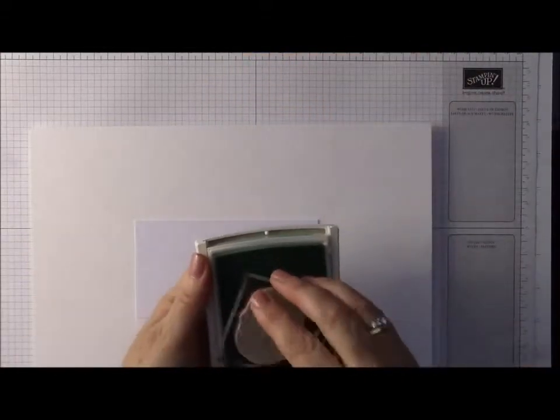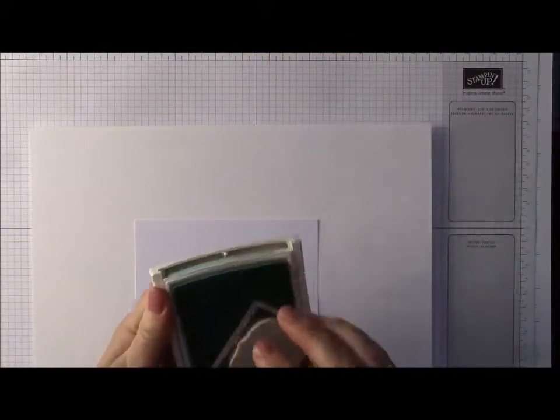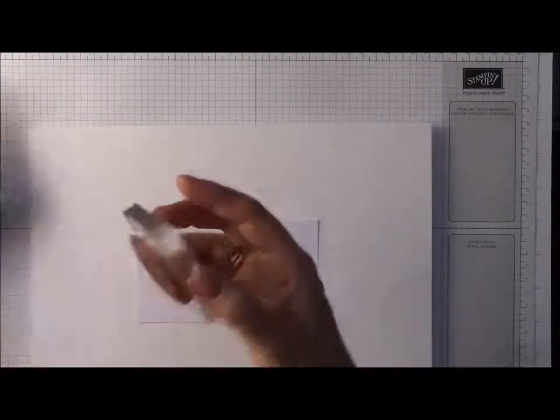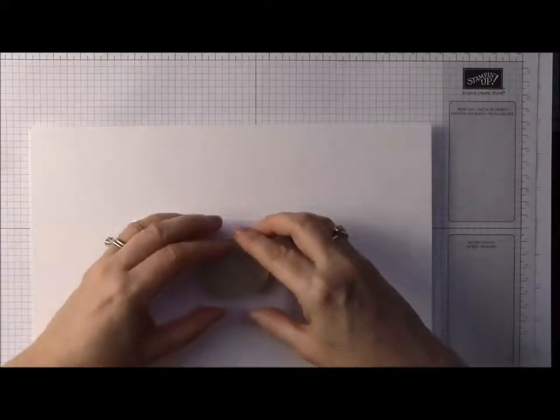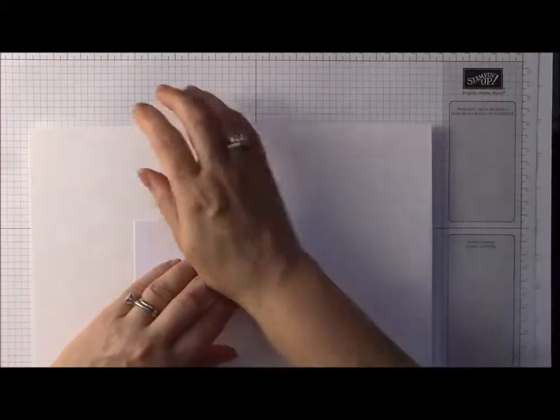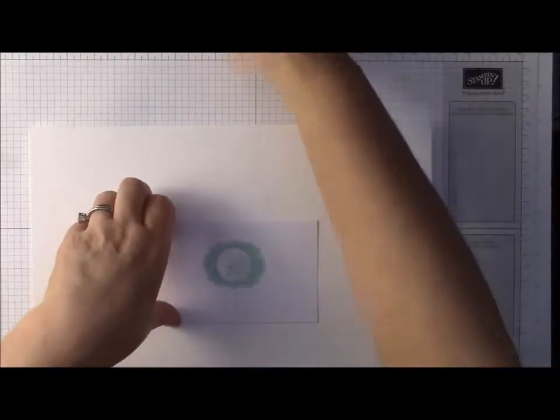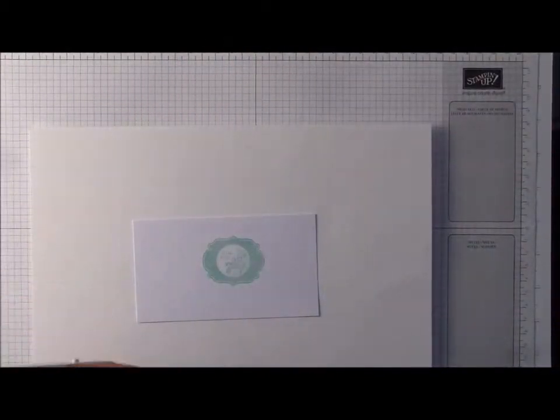And I'm going to use Pool Party ink. Ink my stamp up. So I've already mounted it on the acrylic block. Get plenty of ink on. And pop it on. Press it down. There we go. I'll close my ink because I don't need that again.